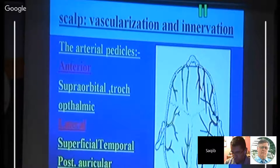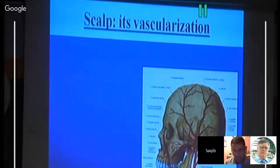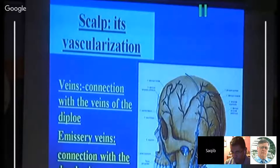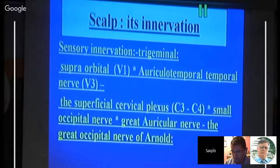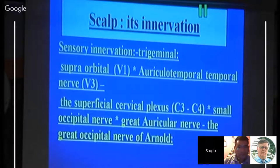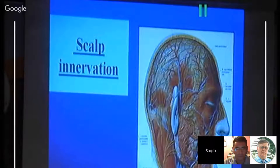Arterial supply to the scalp anteriorly comes from the supra-orbital and ophthalmic arteries, laterally from the superficial temporal artery, and posteriorly from the occipital arteries. Always go back and learn your anatomy in detail — surgical anatomy is much more detailed than basic anatomy. The venous connections are usually from the diploic and emissary veins and the dural venous connections. Innervation is sensory, from the trigeminal V1, auriculotemporal branch of V3, and the cervical plexus giving the greater auricular and greater occipital nerves. You must know the large branches you will sacrifice while giving incisions.